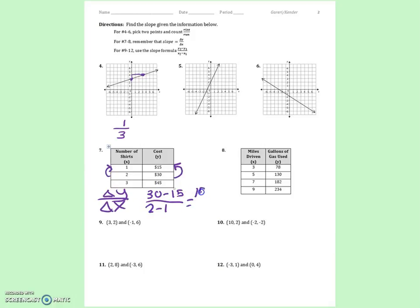30 minus 15 is 15. 2 minus 1 is 1. So our slope there is 15. Number 8 is done the same exact way.